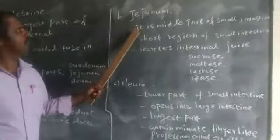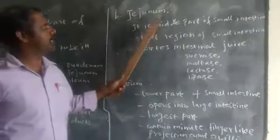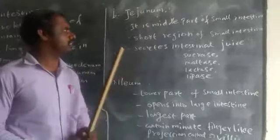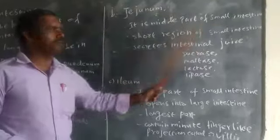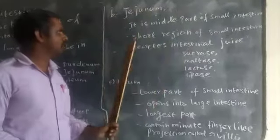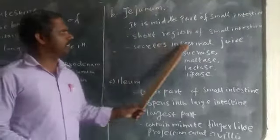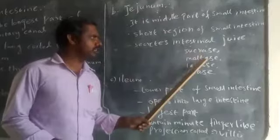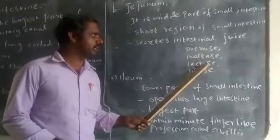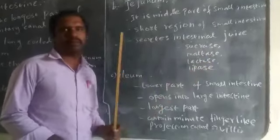Second, jejunum. Jejunum is the middle part of the small intestine. It is the soft region of the small intestine. It secretes intestinal juice containing sucrase, maltase, lactase, and lipase.